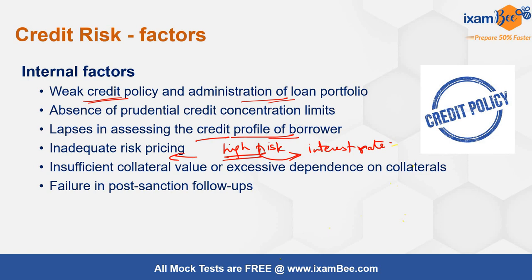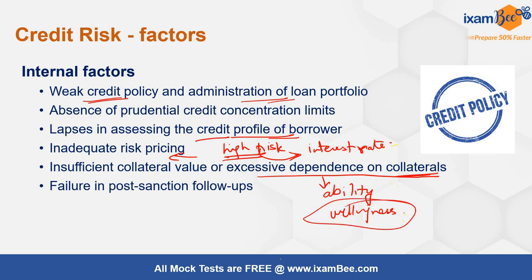Insufficient collateral or excessive dependence on collateral — neglecting other aspects of the borrower's credit profile — is also problematic. Excessive dependence is a problem because you may have confirmed the ability to repay through collateral, but may have failed to check the willingness. So although you had the collateral, you still saw a default because there was no willingness, and you ended up in a long recovery process. Finally, failure in post-sanction follow-up is a key internal factor — just giving the loan and assessing before giving it is not enough. We have to continuously monitor to ensure it does not go bad.